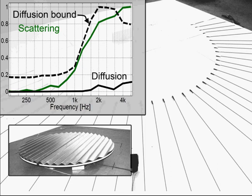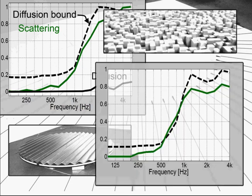Now consider RPG's 4-inch skyline diffuser. The scattering coefficient is seen to be comparable to that of the sinusoid, but they are far from comparable diffusers.